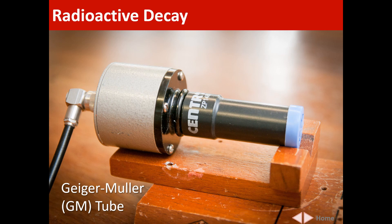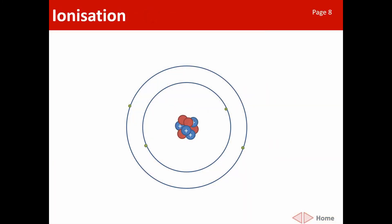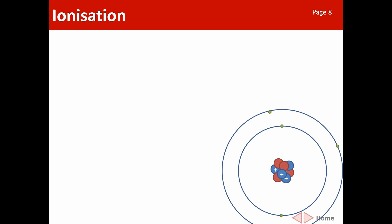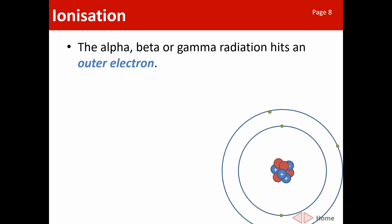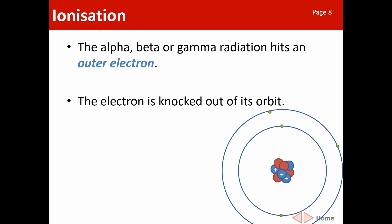We call it ionizing radiation because the alpha, beta, or gamma particle that comes in will cause an atom to lose an electron if it hits it. Here we have an atom with four protons and four neutrons — neutral, so it has four electrons. A particle comes in and collides with an outer electron, knocking it off. We're then left with four protons and three electrons — a charged atom with one more positive charge than negative. That's called an ion.